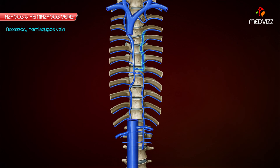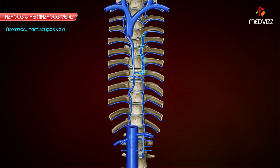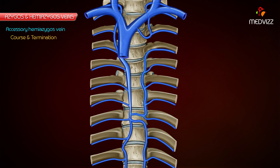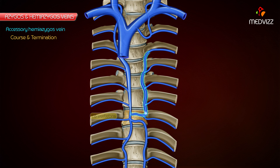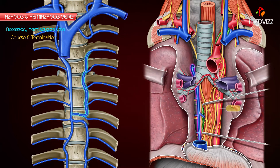Accessory Hemiazygous Vein. The accessory hemiazygous vein lies only on the left side and corresponds to the upper part of the azygous vein. Course and Termination: The accessory hemiazygous vein begins at the medial end of the left 4th or 5th intercostal space and descends to the left side of the vertebral column. At the level of the 8th thoracic vertebra, it turns to the right and passes in front of the vertebral column, posterior to the aorta, esophagus, and thoracic duct to terminate into the azygous vein.